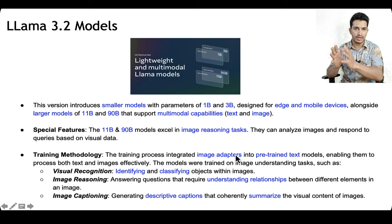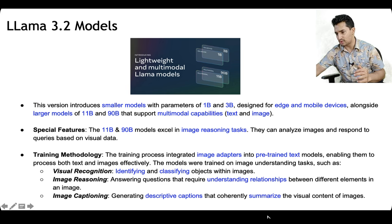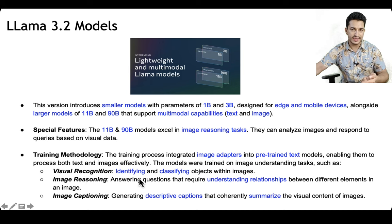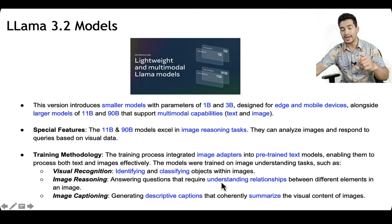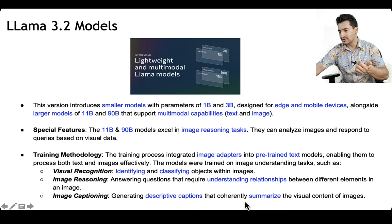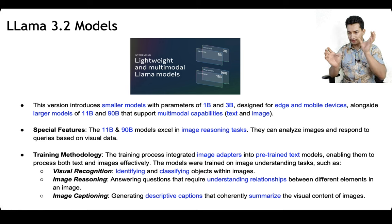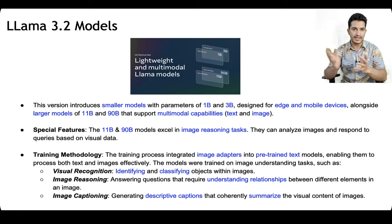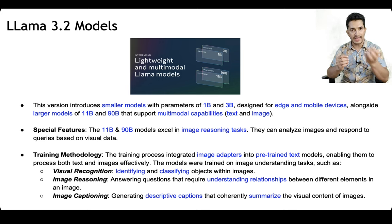Image models were integrated with the text models. The model was trained on image understanding tasks such as image recognition — identifying and classifying objects in images — image reasoning, answering questions that require understanding relationships between different objects in an image, and image captioning, generating descriptive captions that summarize visual content. Once trained on these tasks, the model became very good at multimodal capabilities.